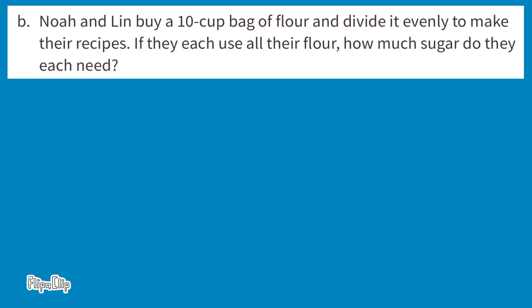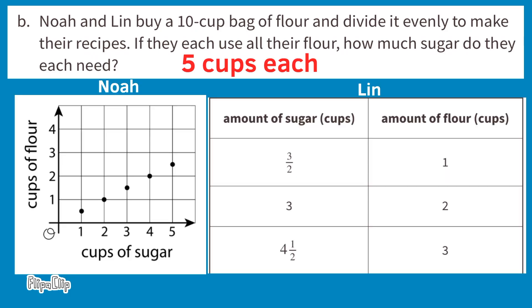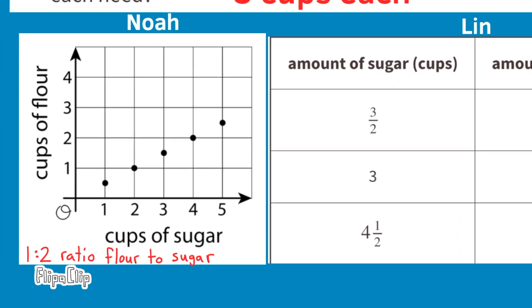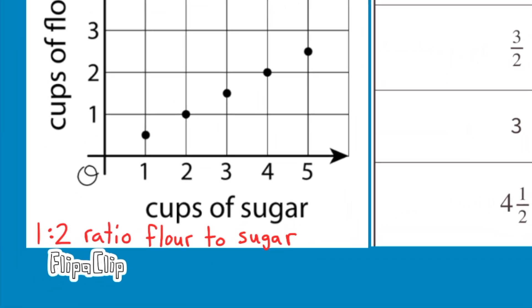Part B: Noah and Lynn buy a 10-cup bag of flour and divide it evenly. If they each use all their flour, how much sugar does each need? 10 ÷ 2 = 5 cups each. Noah's ratio of flour to sugar is 1 cup to 2 cups, and Lynn's ratio of flour to sugar is 2 cups to 3 cups.